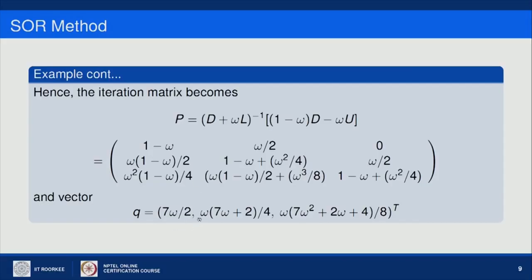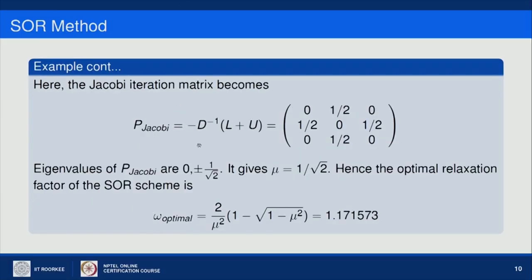We need to find the optimal value of omega using the spectral radius of the Jacobi iteration matrix. For this particular example, the Jacobi iteration matrix is a 3 by 3 matrix. Its eigenvalues are 0, 1/√2, and −1/√2. Therefore the spectral radius of the Jacobi iteration matrix is 1/√2, and the optimal relaxation parameter for the SOR scheme comes out to be 1.171573.